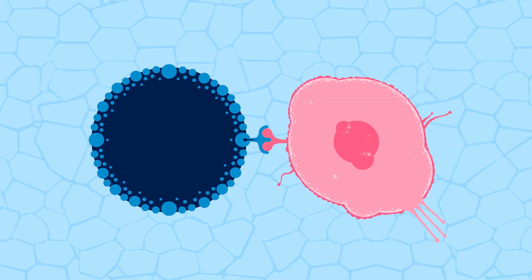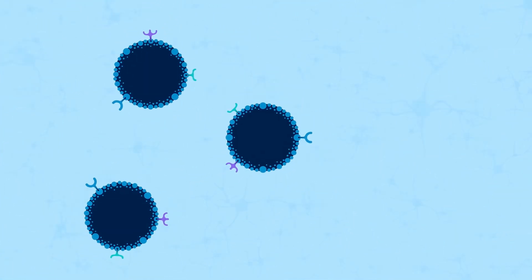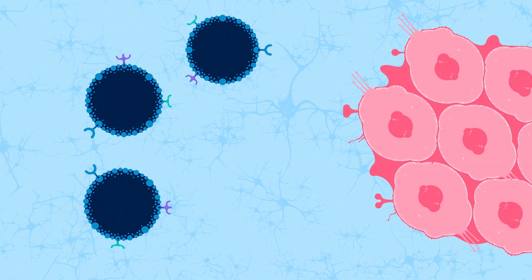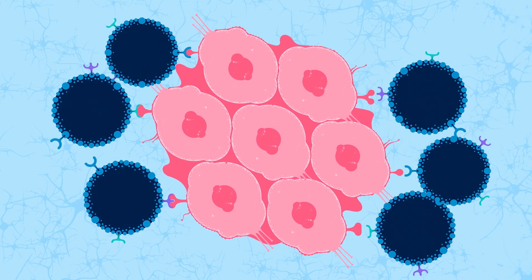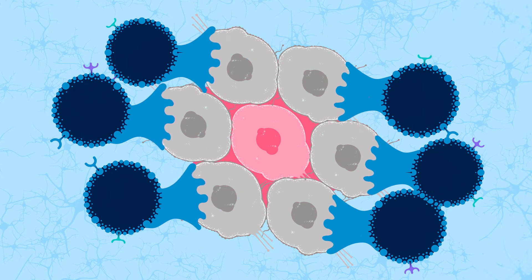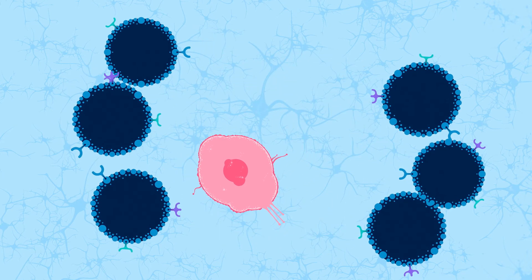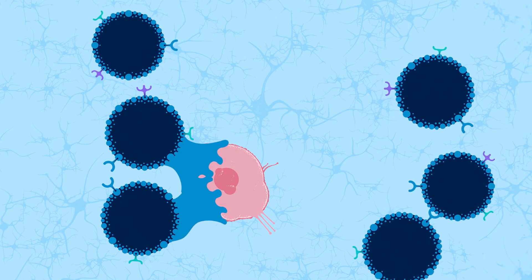They've also created CAR T cells that fight glioblastoma, an aggressive form of brain cancer. They target antigens found on brain tumors. But because the same antigen also is found on healthy cells in the liver and kidneys, the CAR T cells are programmed to activate only after detecting brain tissue.